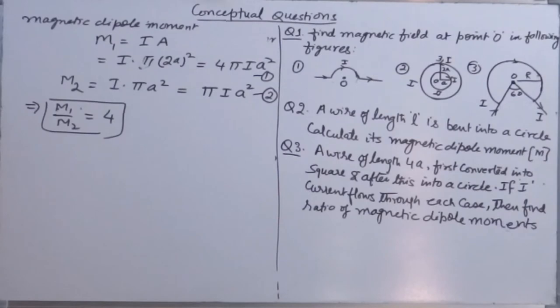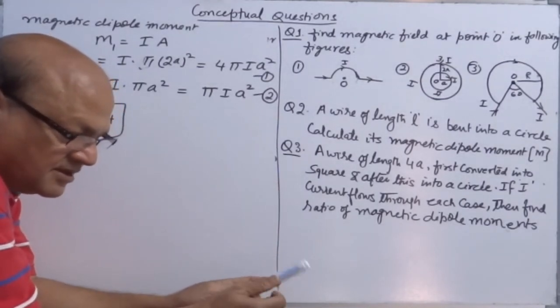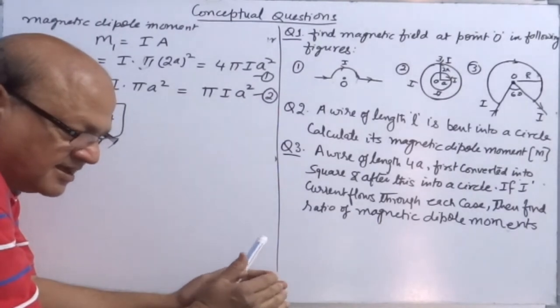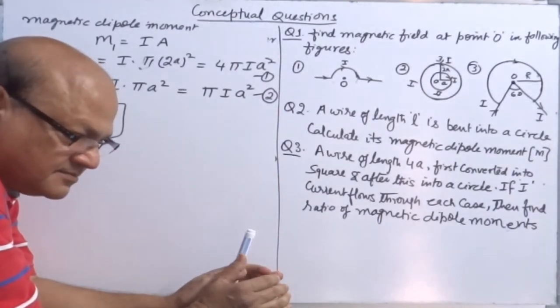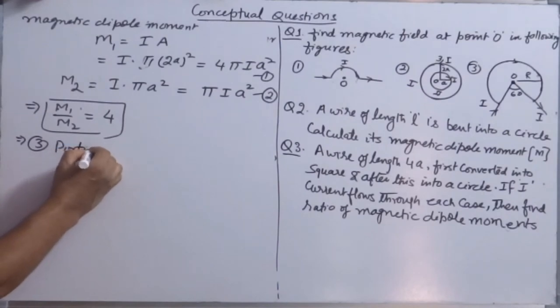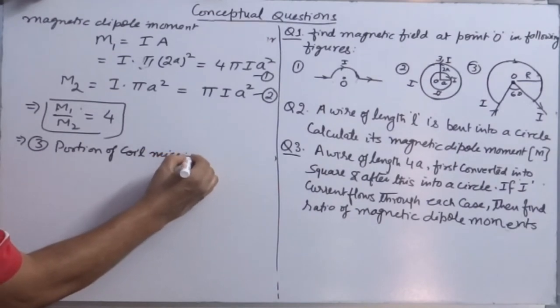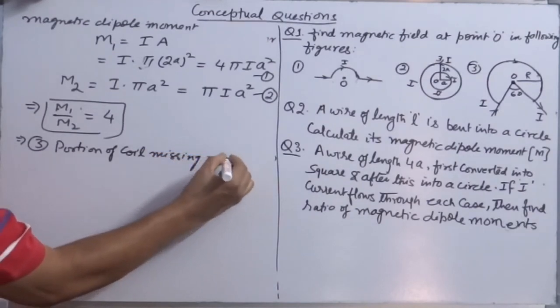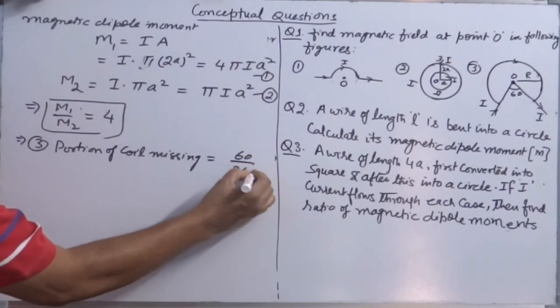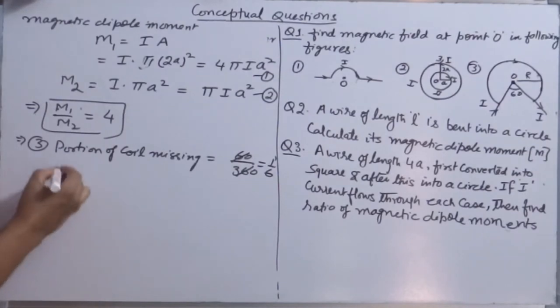Third is 60 degree angle, meaning the total angle made by a circular coil is 360. How much of the coil, the portion of the coil in third, the portion of a coil missing? How much is missing? 60°/360° = 1/6 portion of the coil is missing.